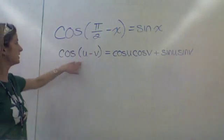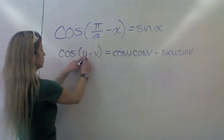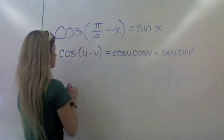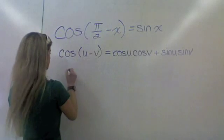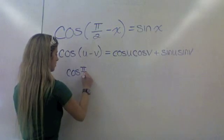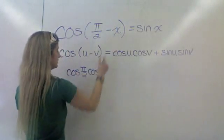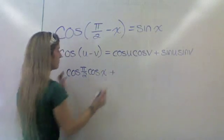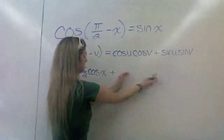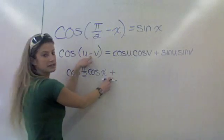So now I'm going to use this identity to prove this one. If I substitute pi over 2 for u and x for v, let's see what happens. We're going to rewrite this as the cosine of pi over 2 times the cosine of x. Remember with this difference identity the signs change — cosines together, then sines together, and it's plus. If this is minus, this is plus, and likewise if this is plus, this is minus.